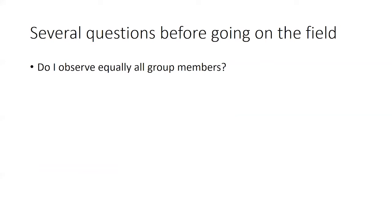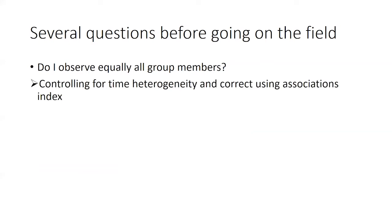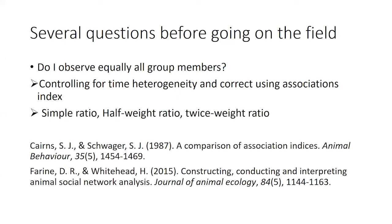Another question is whether you observe all group members equally. If you can observe all animals in the same way — for instance, with the same number of focal sampling hours per individual — you don't need to use a correction or calculate association indices. But if you have unequal scans, unequal focal sampling, or individuals absent during observations of others, you must use an association index such as the simple ratio, the half-weight ratio, or the twice-weight ratio.